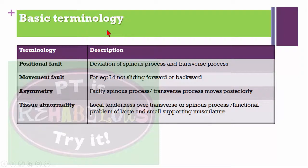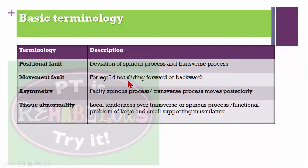Let's learn basic terminology, which will be helpful while learning spine mobilization. If a patient has deviation of the spinous process or transverse process, you must say the patient has a positional fault rather than simply right or left deviation. A movement fault refers to a vertebra not sliding forward or backward — for example, L4 not sliding forward or backward.